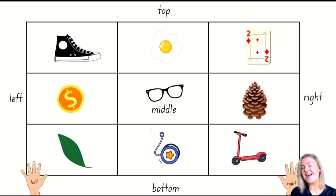Little mathematicians, I see something down the bottom on the right. What is it? So think of the top row, think of the middle row, and then think of the bottom row. It's on the bottom row. And it's on the right. What is it? It's the red scooter.